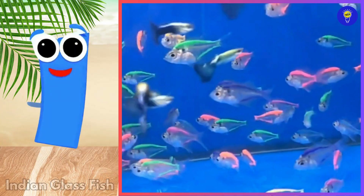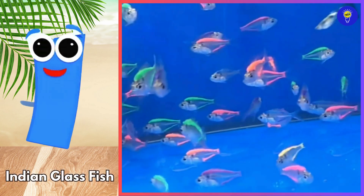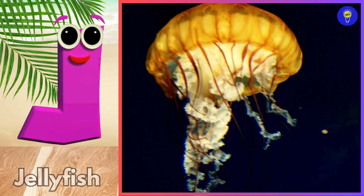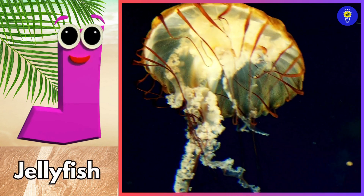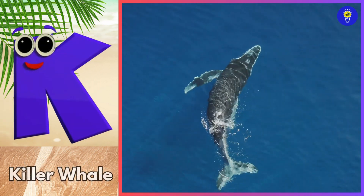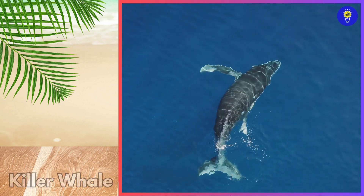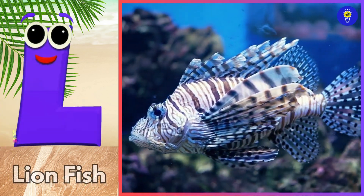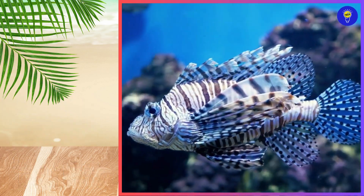I is for Indian glass fish, eh, Indian glass fish. J is for jellyfish, juh, jellyfish. K is for killer whale, kuh, killer whale. L is for lionfish, luh, lionfish.